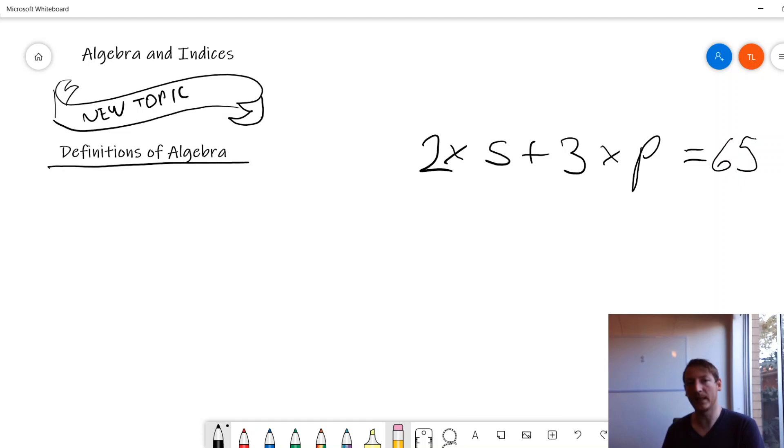So when we see a letter, when we're doing algebra, we call it a pronumeral and it's actually just in place of a question mark, something we don't know yet but we might try and figure out later.